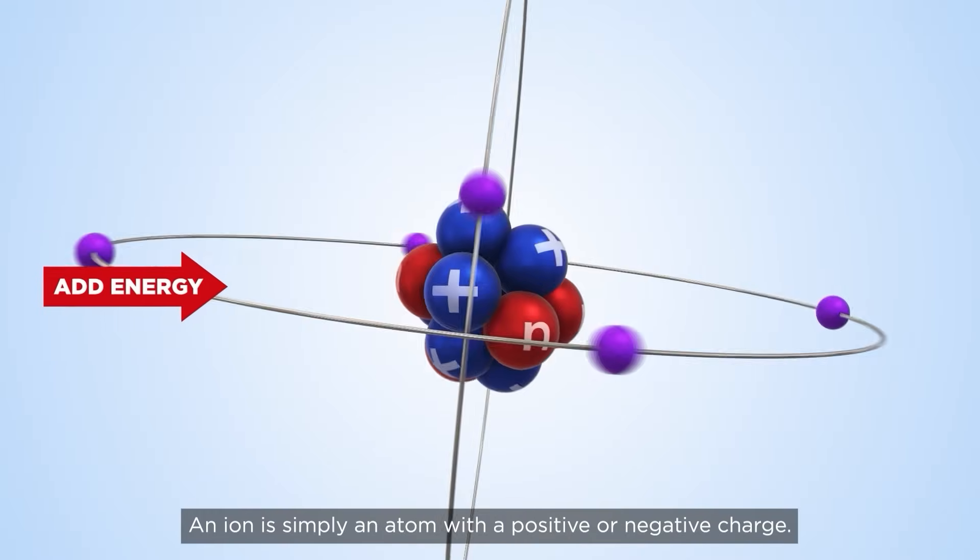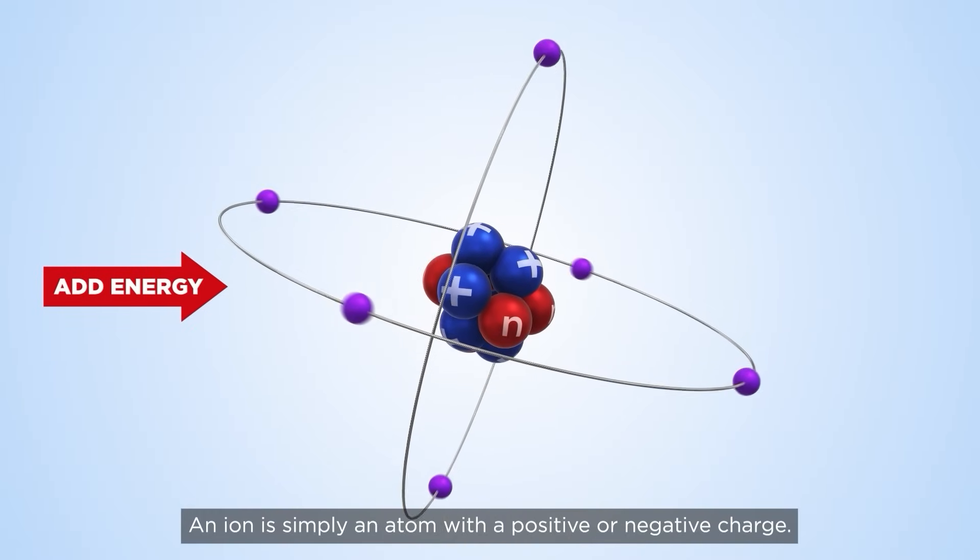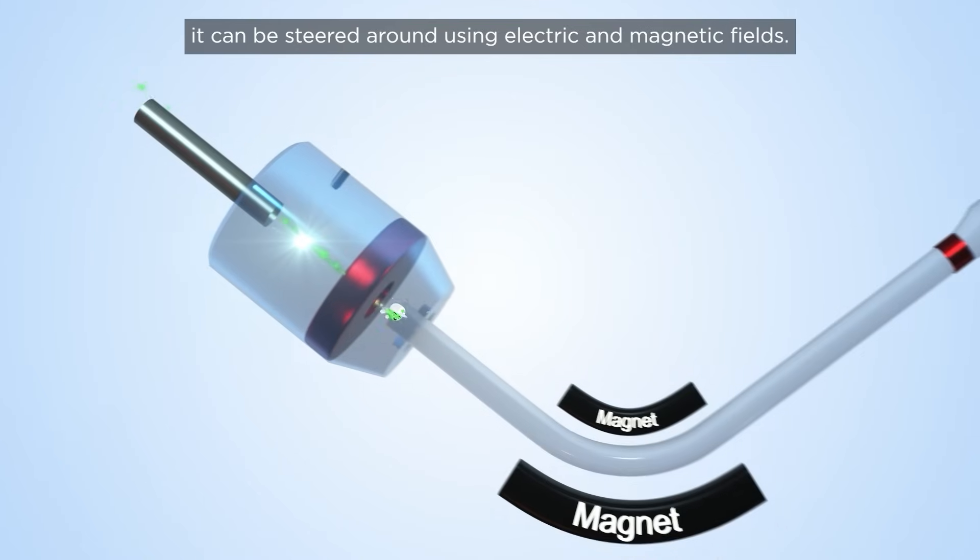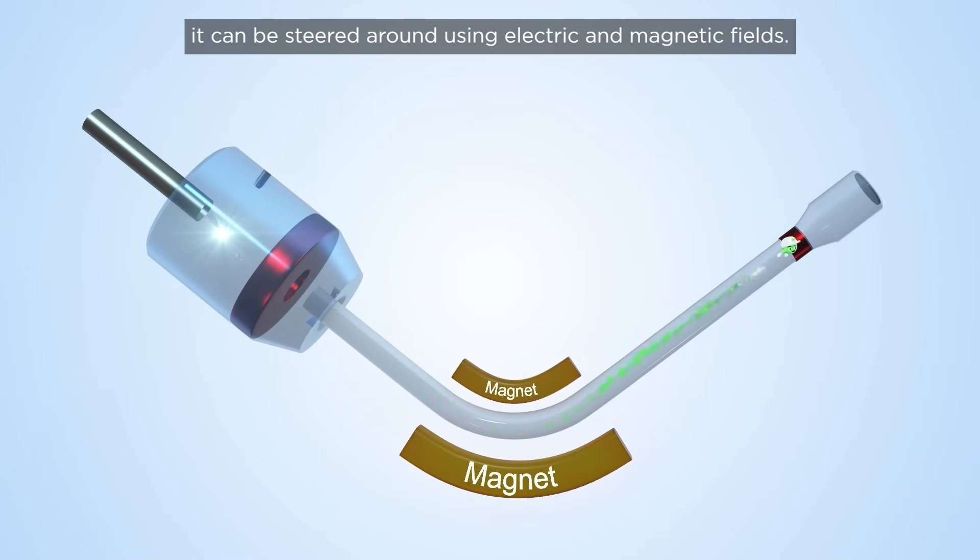An ion is simply an atom with a positive or negative charge. Once an atom has a charge, it can be steered around using electric and magnetic fields.